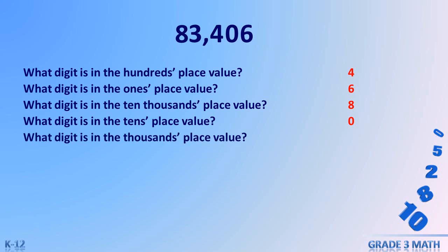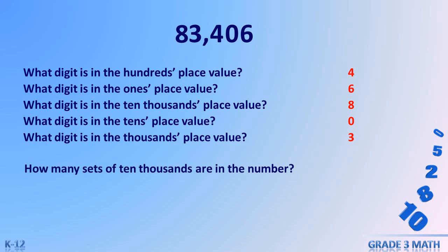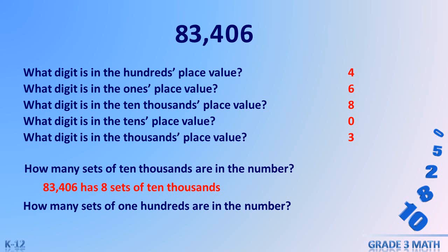What digit is in the thousands place value? The answer is three. How many sets of 10,000s are in the number? 83406 has eight sets of 10,000s. How many sets of 100s are in the number? 83406 has four sets of 100s.